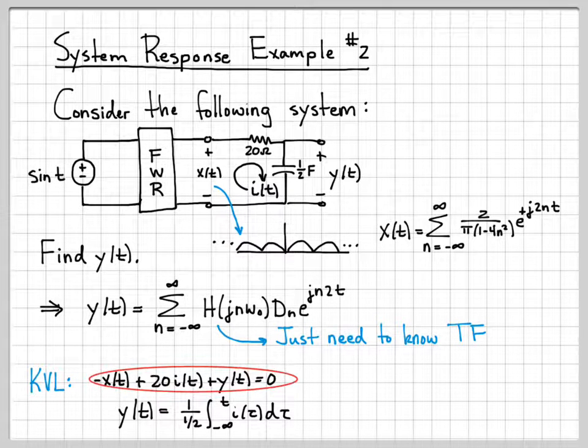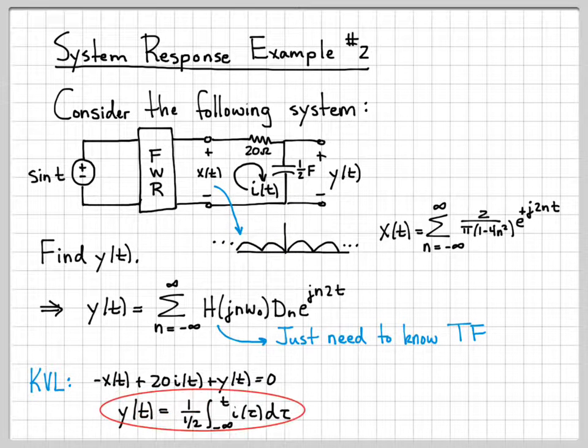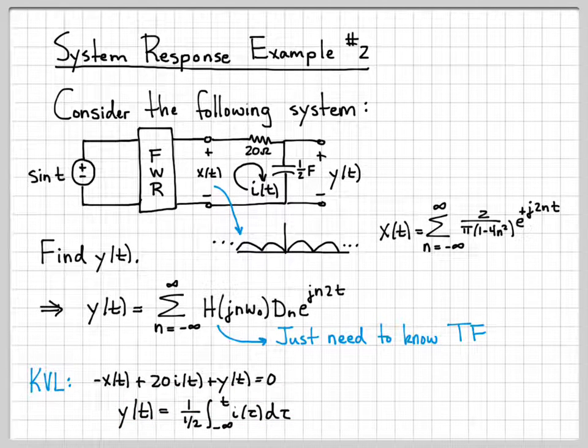So here's my KVL equation I'm starting with. I also know how voltages across capacitors are related to currents through the capacitor. And that's this equation right here. In general, the voltage across a capacitor is 1/C, the integral for all time of the current flowing through that capacitor. So I can write that equation right there.